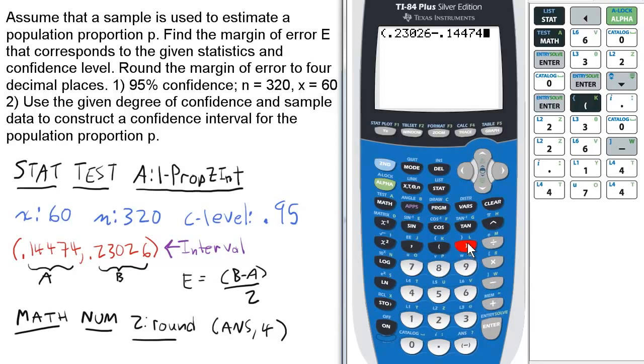Be sure to close parentheses, then divide by two and press enter. That is your E value, the error value for the one prop z interval question.